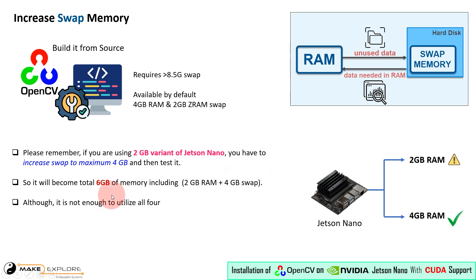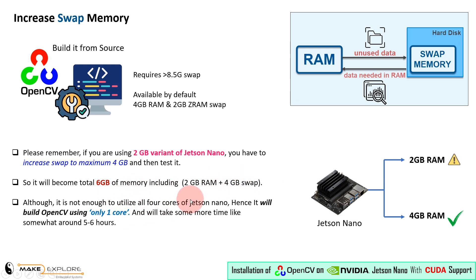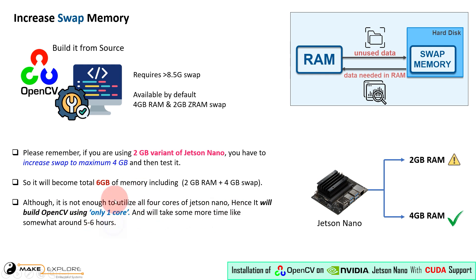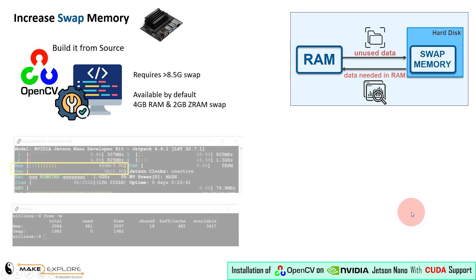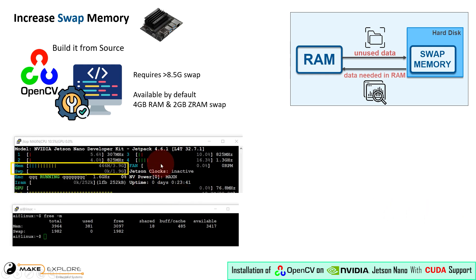Although it is not enough to utilize all four cores of Jetson Nano, it will build OpenCV using only one core and will take some more time — around 5 to 6 hours. Then, if you have Jetson Nano with 4GB of RAM just like us, then follow along. Here you can see in this image our Jetson Nano has 4GB of RAM and 2GB of swap space.